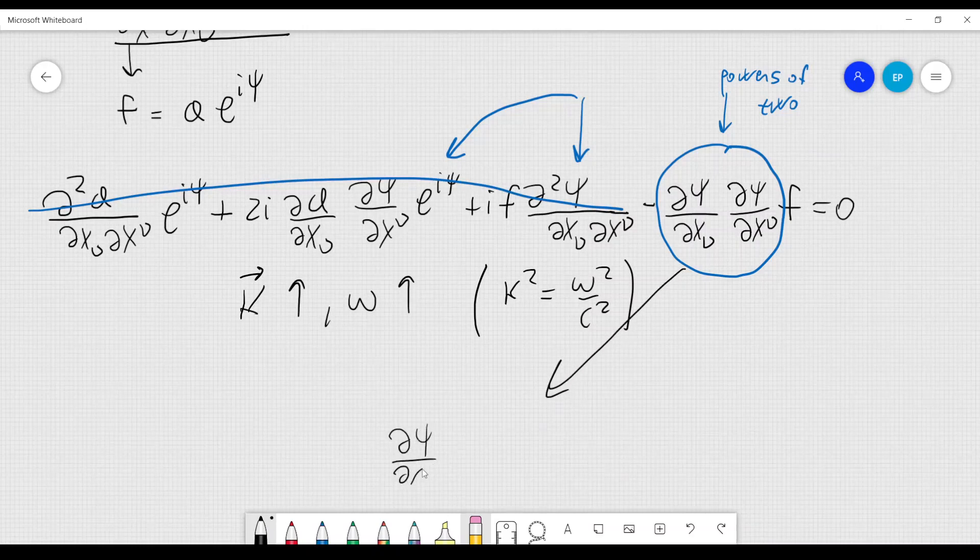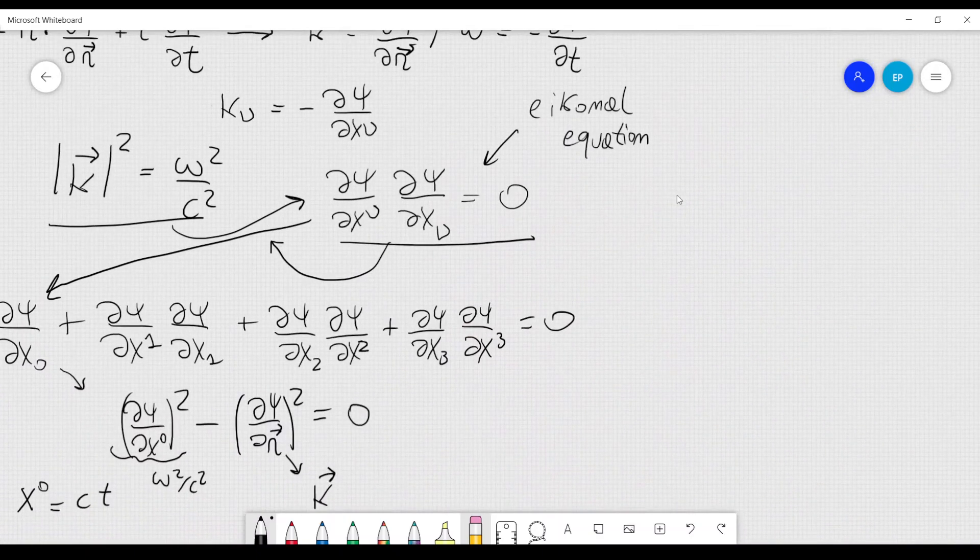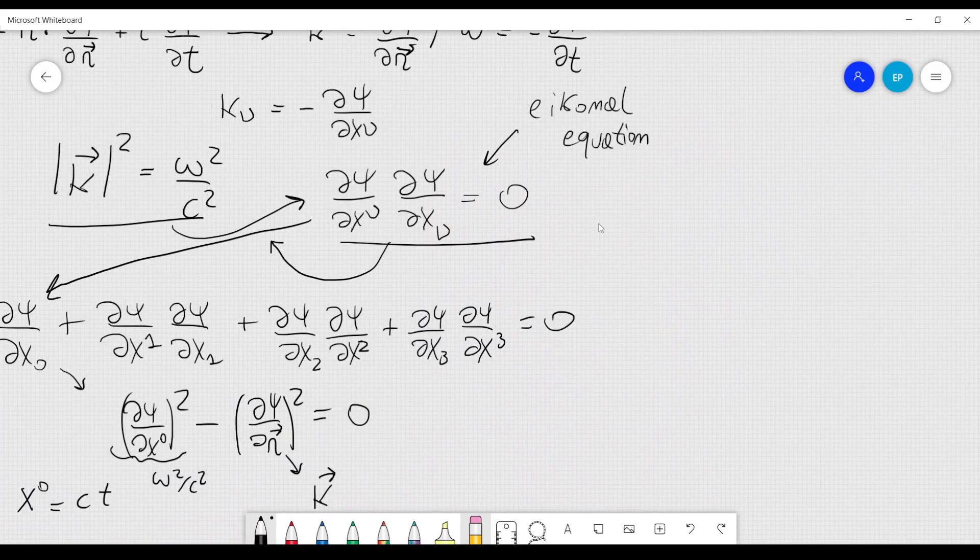But what is this? d psi over dx nu, d psi over dx nu equal to zero. This is exactly the iconal equation, which I have already written here, and I have derived it from a different assumption.